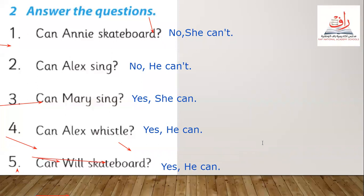So these are the answers for the story about can and can't. Write the answers. Don't forget to start with a capital letter and end with a full stop. And don't forget about can't — we should put an apostrophe.